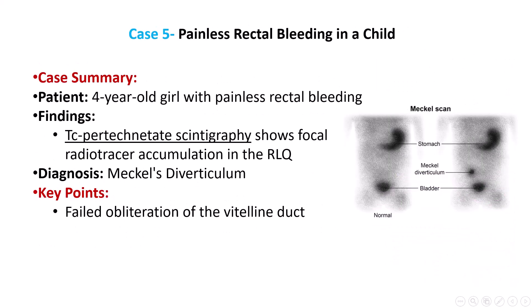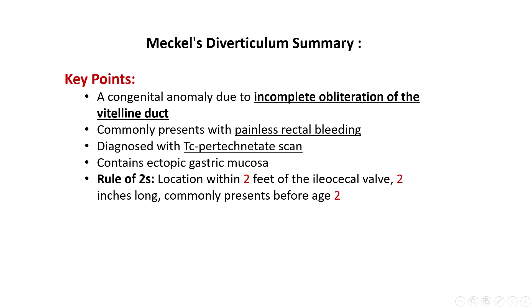Finally, a 4-year-old girl presents with painless rectal bleeding. TC-pertechnetate scintigraphy reveals focal radiotracer accumulation in the right lower quadrant, consistent with Meckel's diverticulum. This condition results from the failed obliteration of the vitelline duct and is frequently highlighted in the NBME exams due to its classic presentation and diagnostic approach. In summary, Meckel's diverticulum is a key USMLE Step 1 topic — remember the embryological origin, the presence of ectopic gastric mucosa, and classic presentations such as painless rectal bleeding and potential complications like obstruction and inflammation.